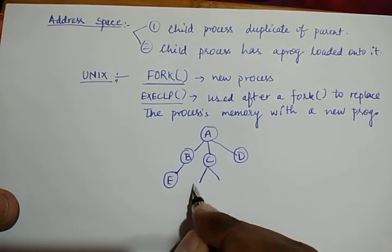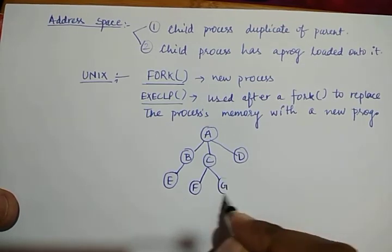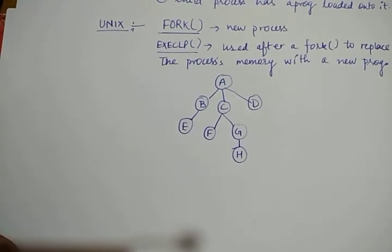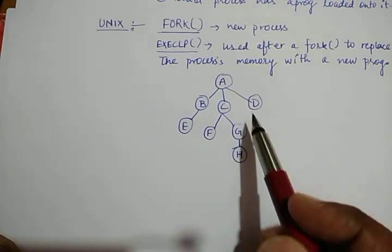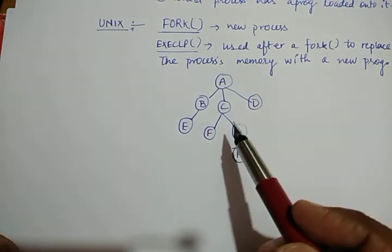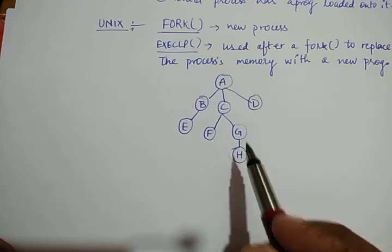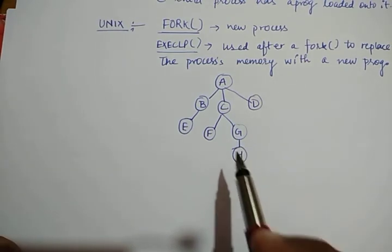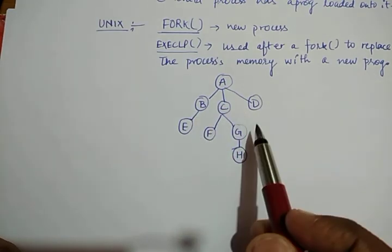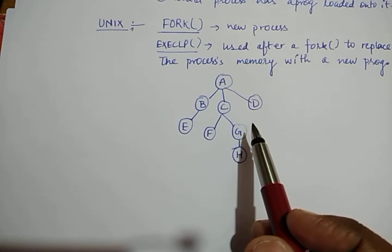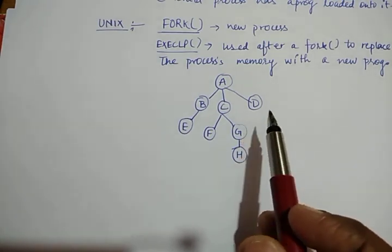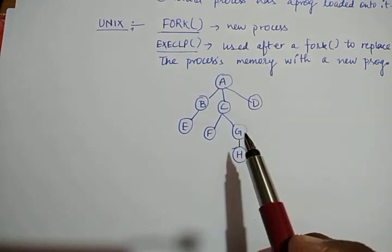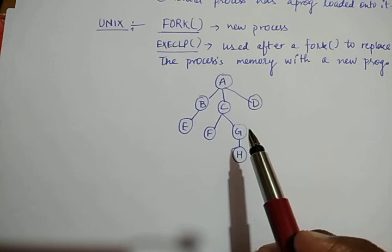For example, A is a parent process that generates child processes B, C, and D via fork. B in turn forks another process E. C generates two child processes F and G, and G generates its child process H. The question is how this theoretical process hierarchy is implemented by the operating system — that will be discussed in our next lecture. If you have any queries, please ask in the comment section. Thank you.